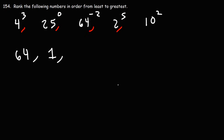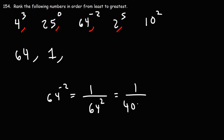64 to the negative 2 is 1 over 64 squared, and that's a very small number. If you plug that into your calculator, 64 squared is 4,096, and 1 divided by 4,096 is 0.000244140625. It's very small.